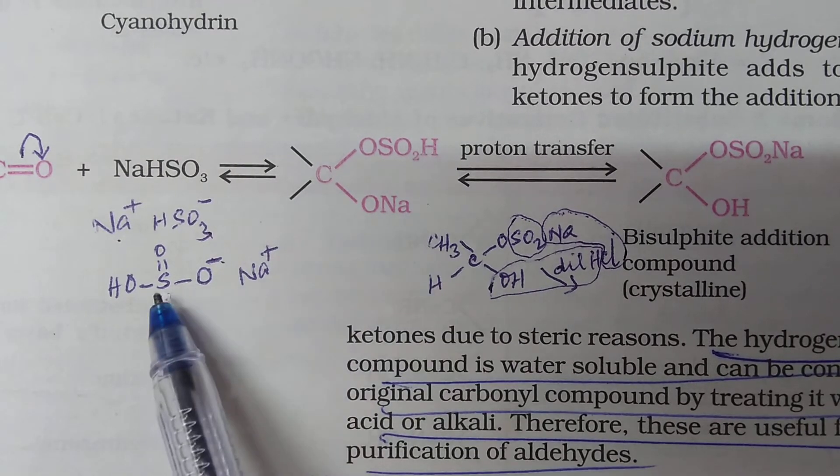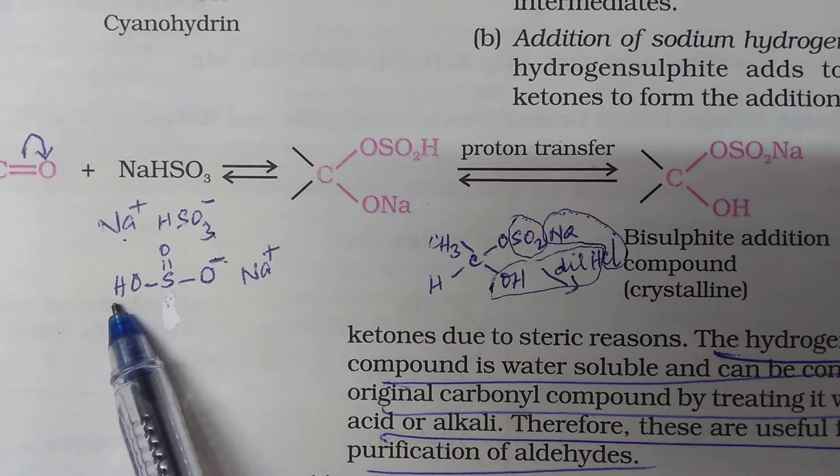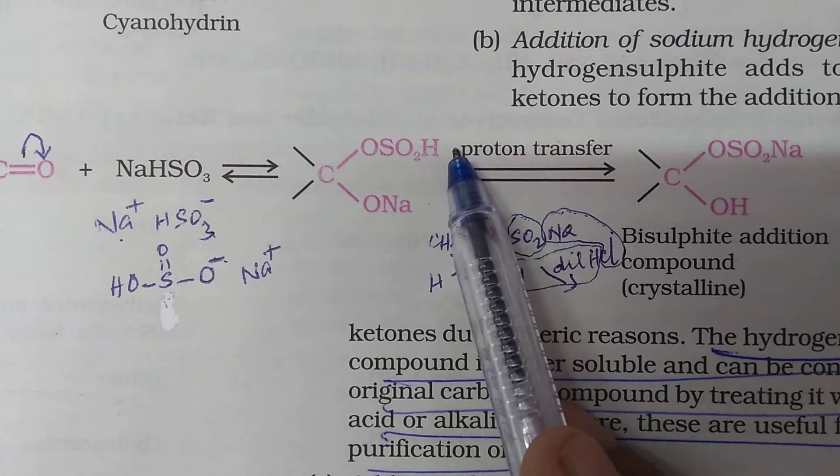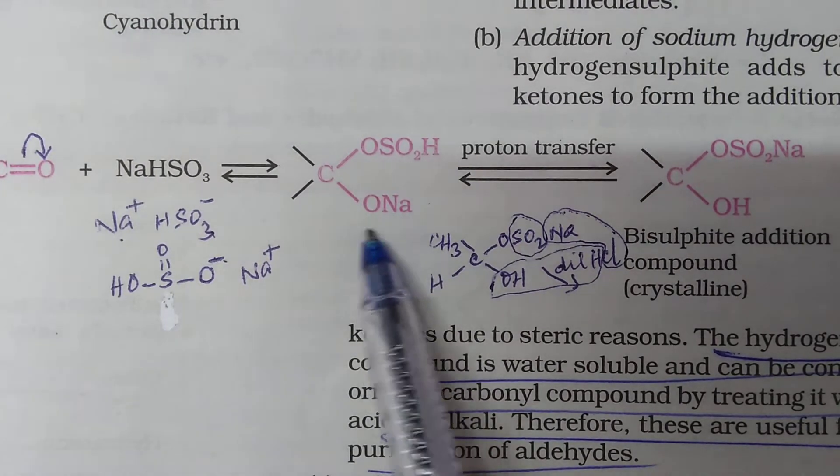OSO2H. Is that clear? How you get OSO2H? That is what is given. And the other one, this O minus will pick up Na plus. So, it will become ONa.